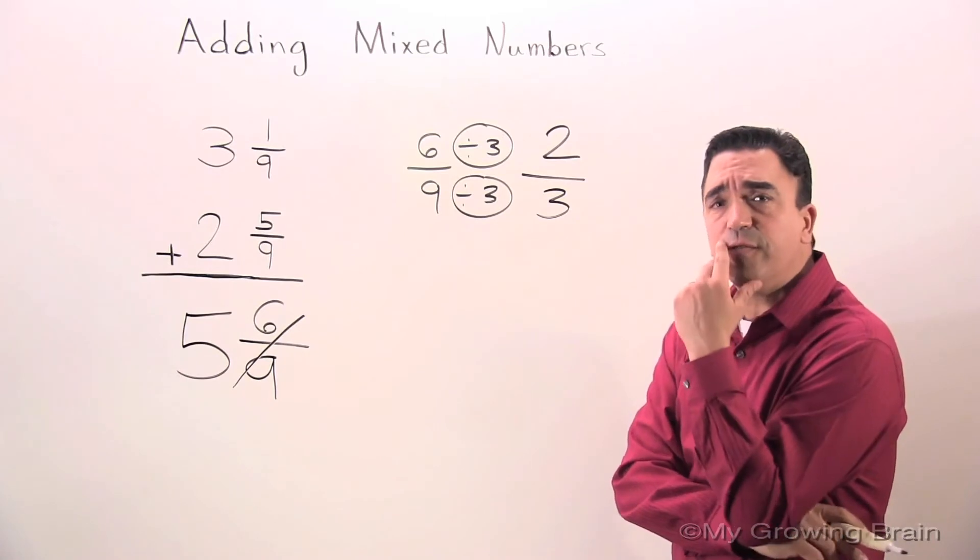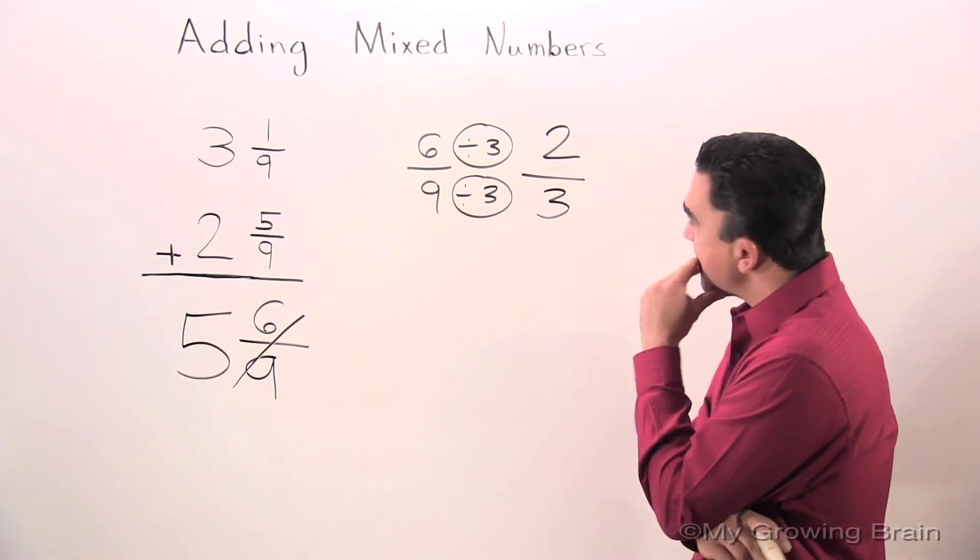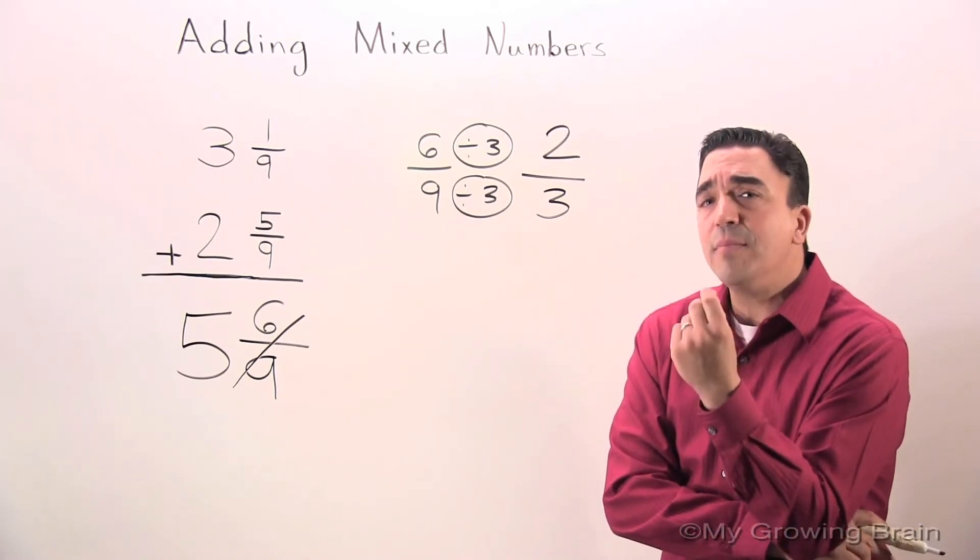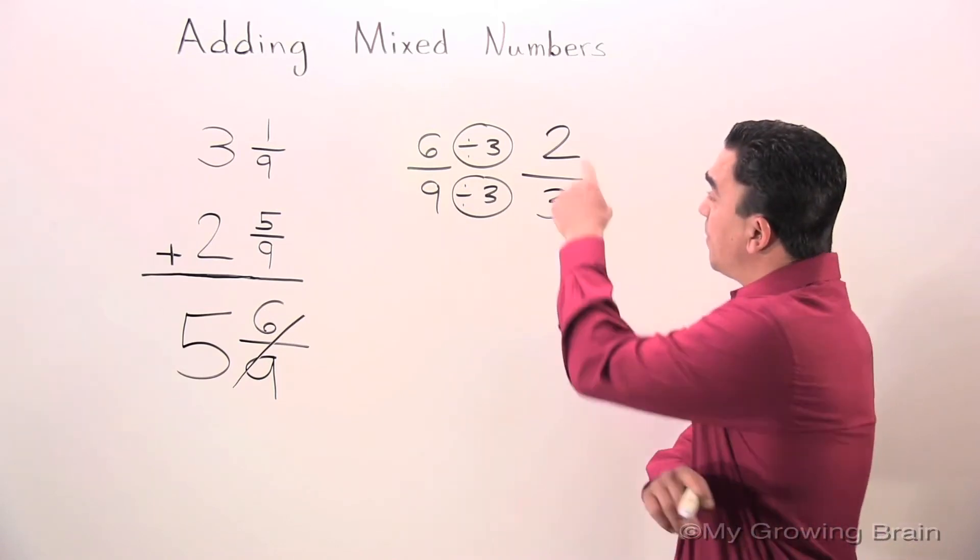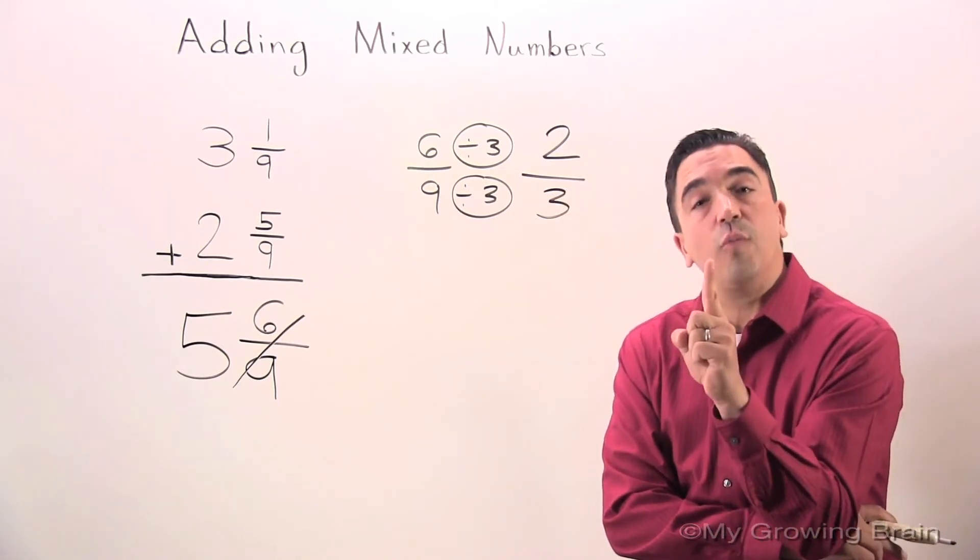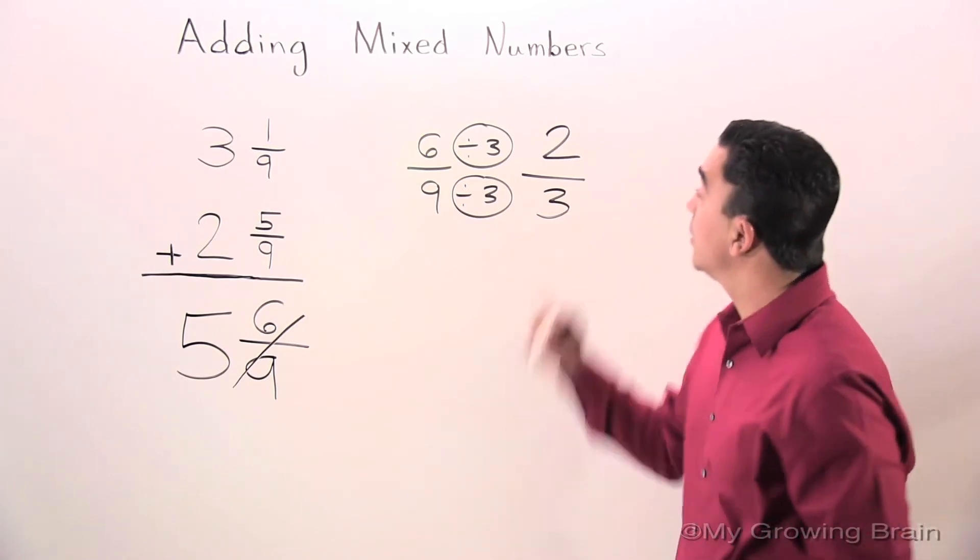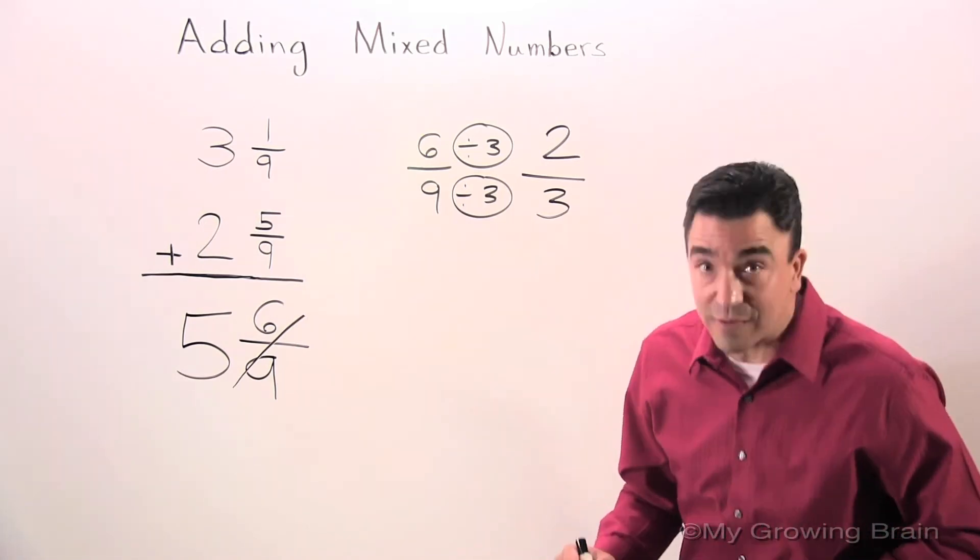Is that in simplest form? Well, the only number that I can think of that can go into both of these numbers evenly is 1. So, that means 2/3 is in simplest form.